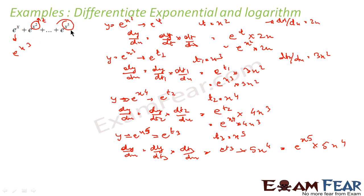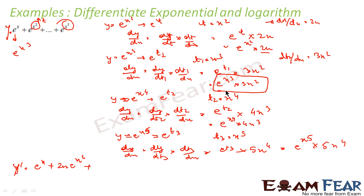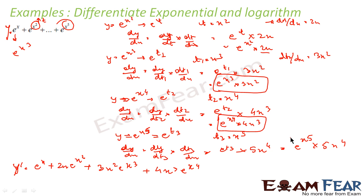Now y' is the summation of all: the differentiation of e^x is e^x itself; e^(x²) gives 2x·e^(x²); e^(x³) gives 3x²·e^(x³); e^(x⁴) gives 4x³·e^(x⁴); and e^(x⁵) gives 5x⁴·e^(x⁵). That is the final answer. I differentiated each term individually and added them.